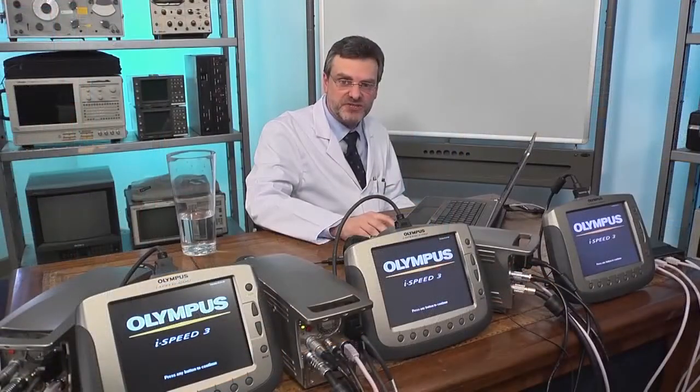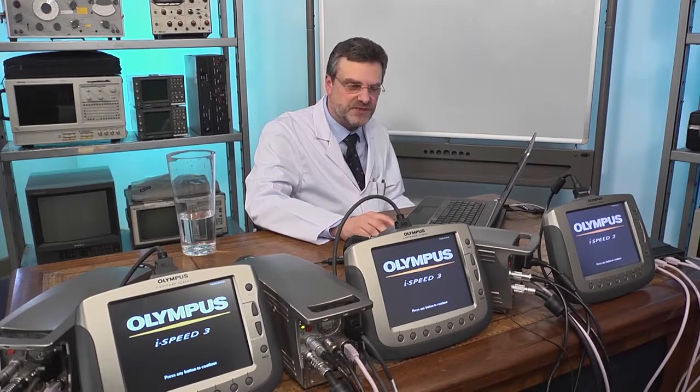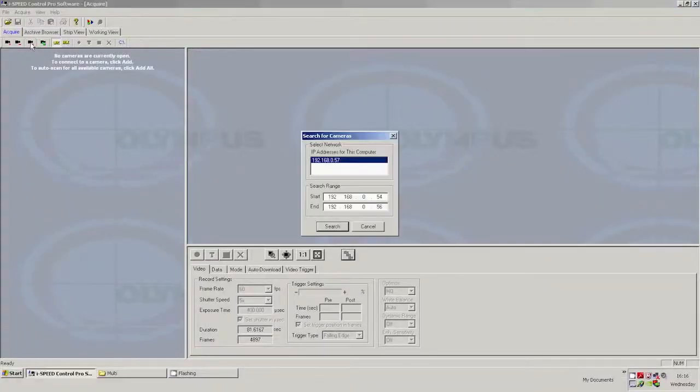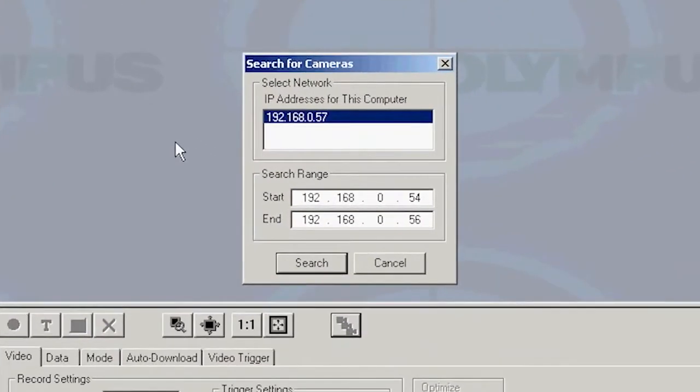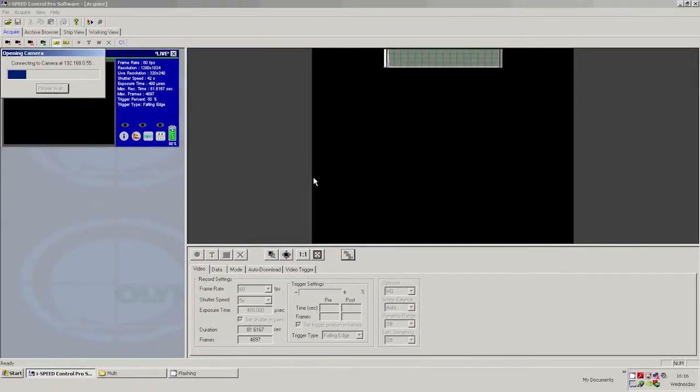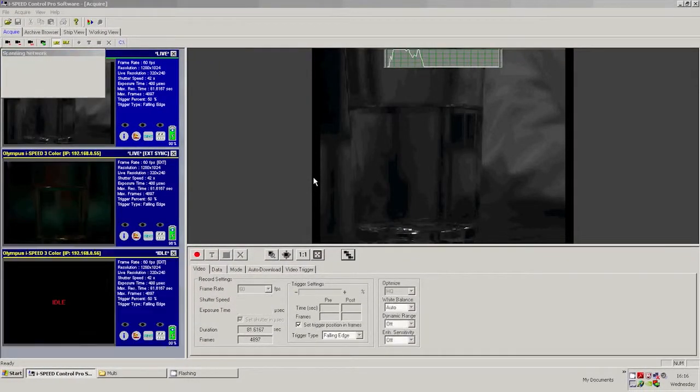So I've booted my software and I'm now going to acquire all the cameras. Because this is a multi-camera demonstration I can click on the acquire all button and I get a box offering me a range of IP addresses to search. I'll hit the search button and the laptop will acquire all three cameras.